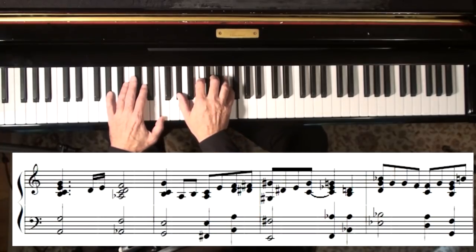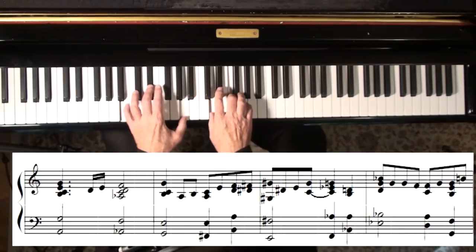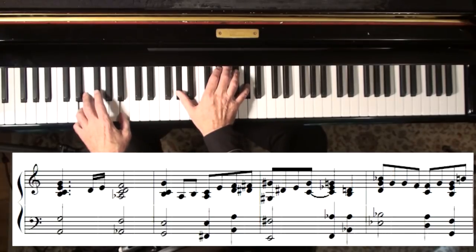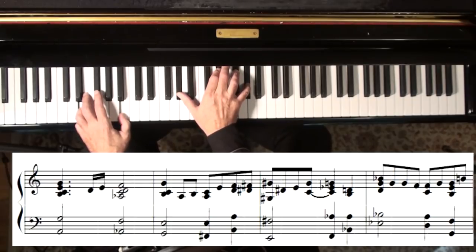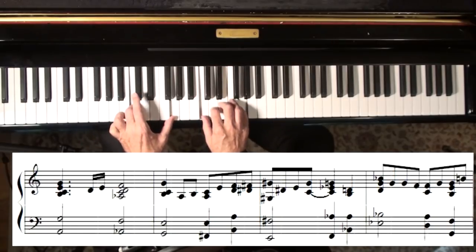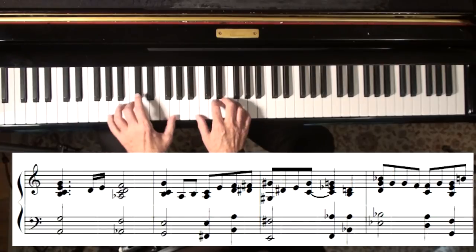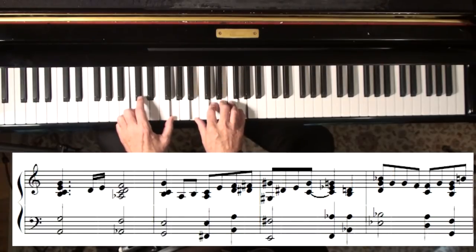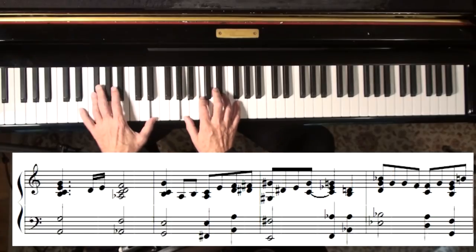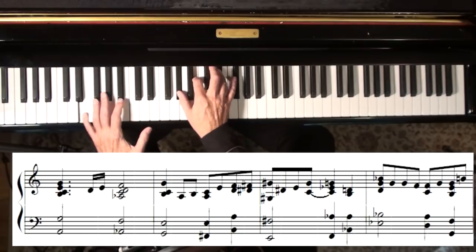'Yuletide carols being sung by a choir, and folks...' Now that's the most unusual chord change in the song. All of a sudden we're in the key of E major. This F# minor 7 is kind of a substitute for the 1 chord—may not seem like it, but it really is. Then if you follow that out to its logical conclusion, you get to E major.